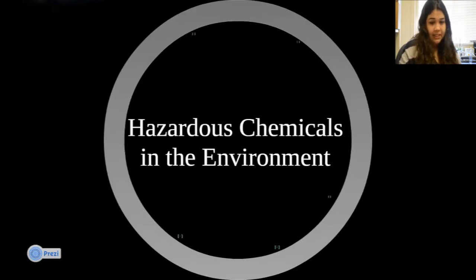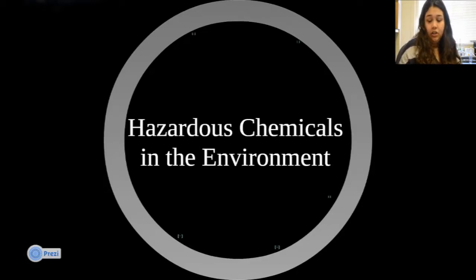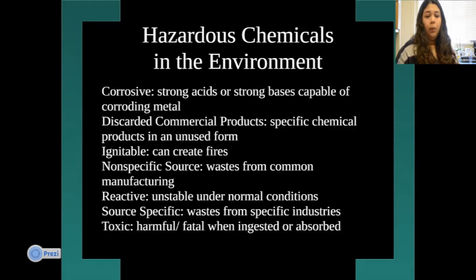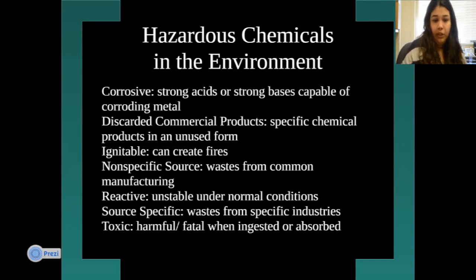The next section covers hazardous chemicals in the environment — chemicals found outside in our environment or inside our homes that can be very hazardous to our health and impact the way we live. There are different kinds of hazardous chemicals. The first is corrosive — strong acids or strong bases capable of corroding metal, rusting or weakening it.